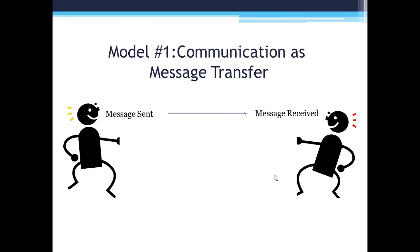So the primary components of this model are the sender, the sent message, the channel the message is sent through, the received message, and the recipient.